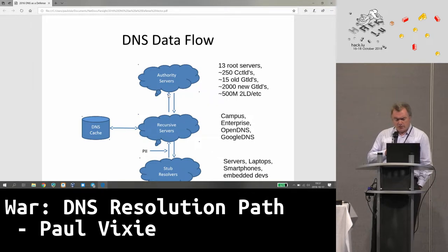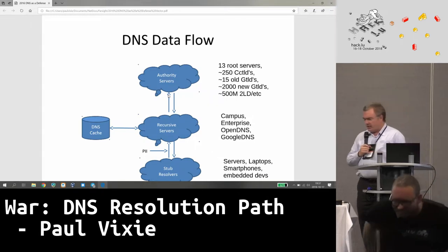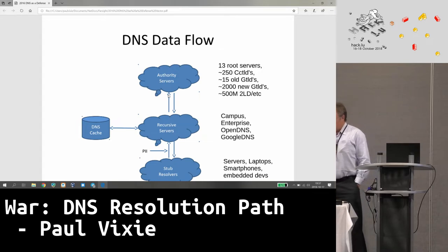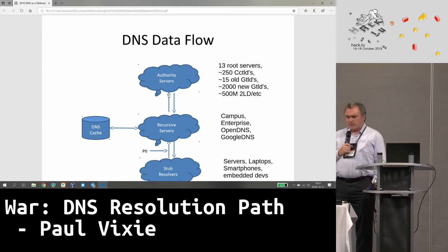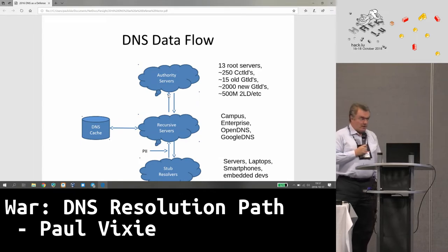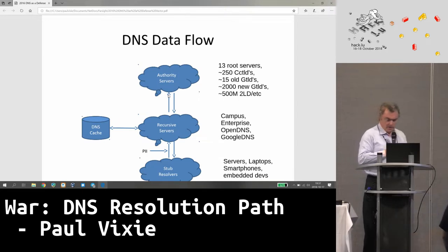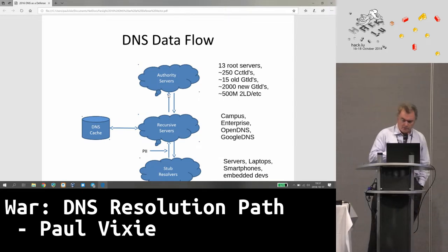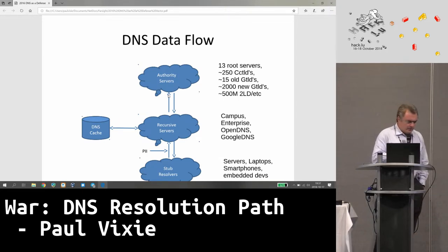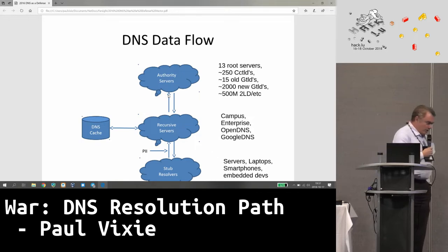You're talking to a recursive server that is normally assigned to you by your DHCP server. So if you're on the Wi-Fi here, you're probably talking to a name server that was assigned as part of getting your address. Some of you don't trust that, and you decide you'd prefer to use 8.8.8.8 or 9.9.9.9, or I guess now 1.1.1.1.